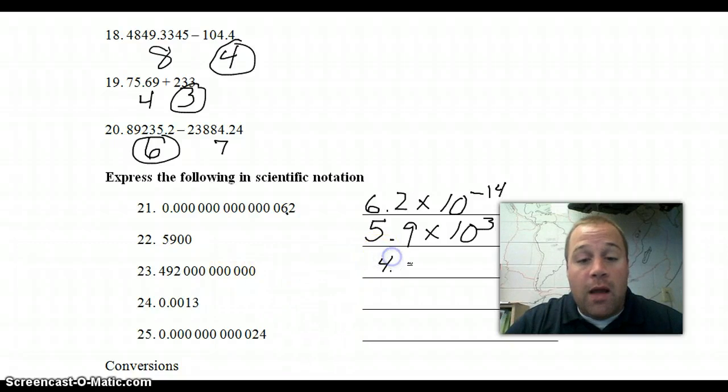Here, our number between 1 and 9.9 would be 4.92 times 10. We moved it left. So, again, it will be positive. It is 3, 6, 9, 10, 11. 4.92 times 10 to the 11th.